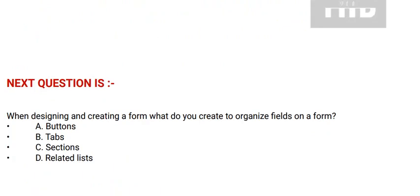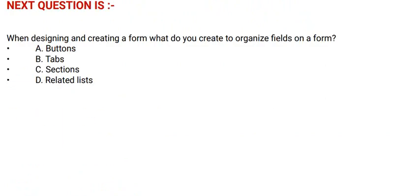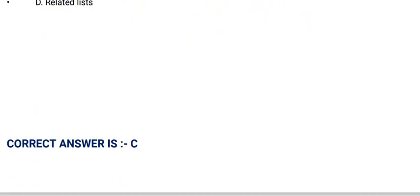Next question: When designing and creating a form, what do you create to organize fields on a form? Option A: buttons. Option B: tabs. Option C: sections. Option D: related lists. The correct answer is Option C.